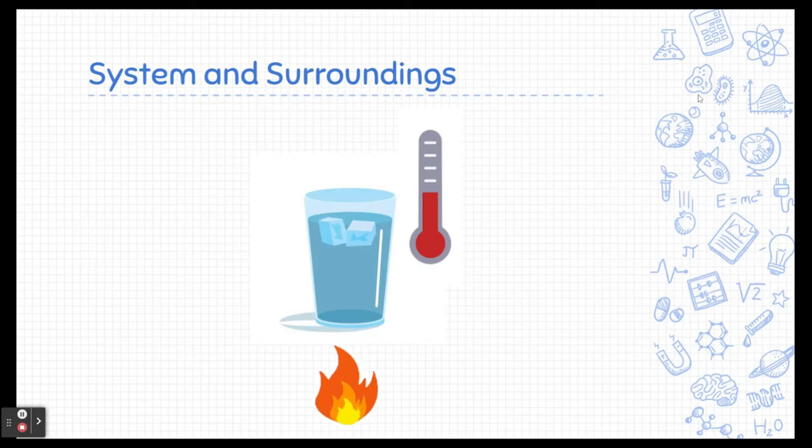Let me give you a closer example of how they're not the same by giving you an example of heat and temperature. To do that I'm also going to talk about two important terms, system and surroundings.